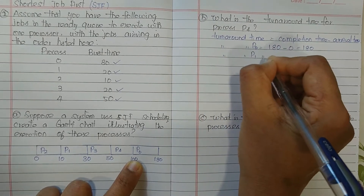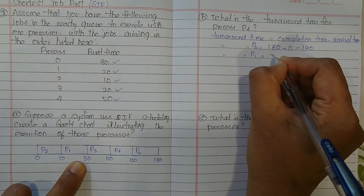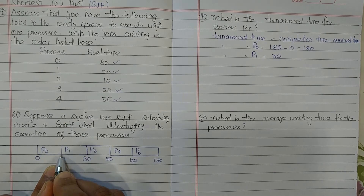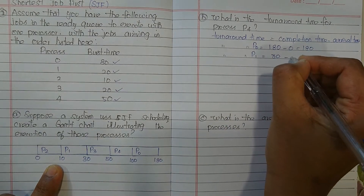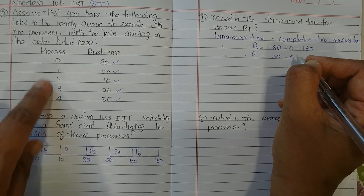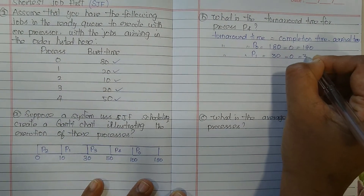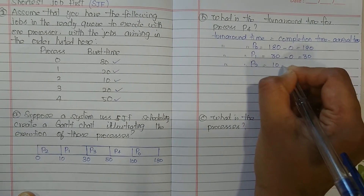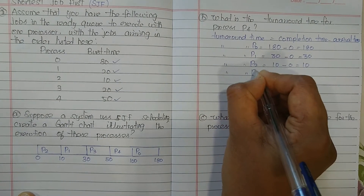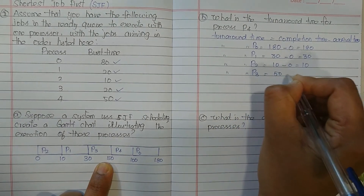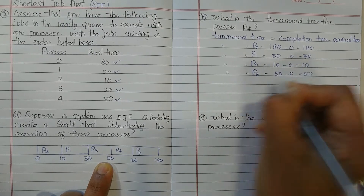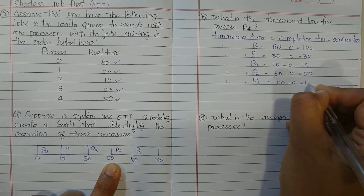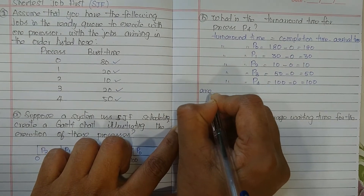Turnaround time for P1: P1 starts at time 10 and finishes at time 30, so completion time is 30 minus arrival time 0, giving 30. Turnaround time for P2: it finishes at time 10, so it's 10 minus 0 = 10. Turnaround time for P3: completion time is 50, so 50 minus 0 = 50. Turnaround time for P4: completion time is 100, so 100 minus 0 = 100.